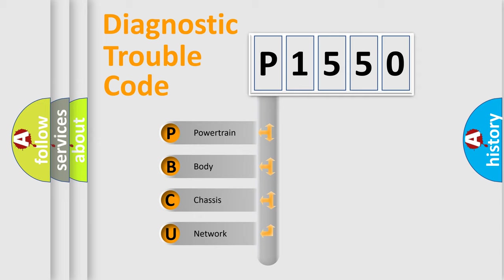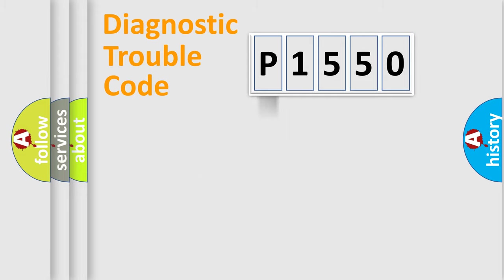We divide the electric system of automobile into the four basic units: Powertrain, body, chassis, and network. This distribution is defined in the first character code.